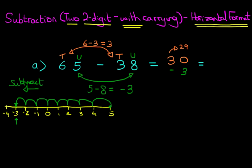So 30, 29, 28, 27. And that is our answer. It is 27. 65 minus 38 equals 27.